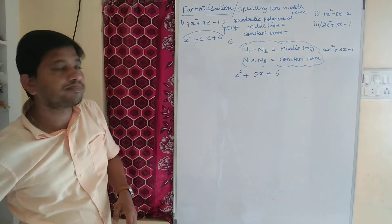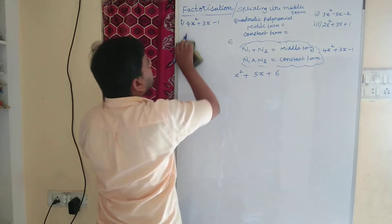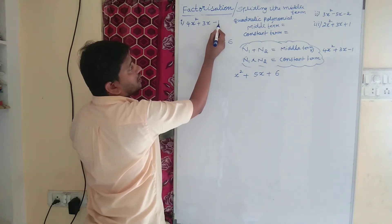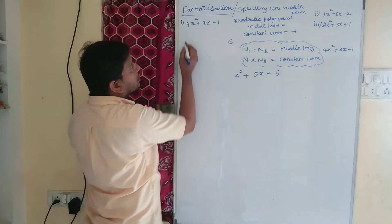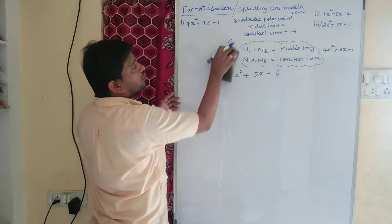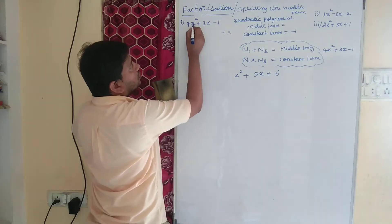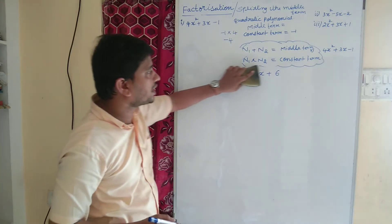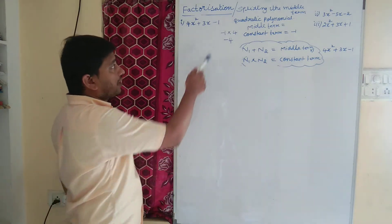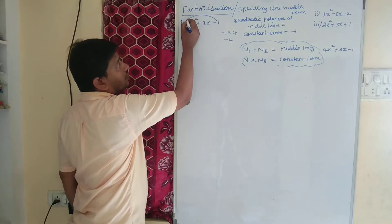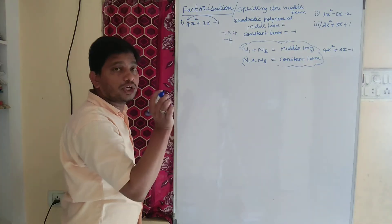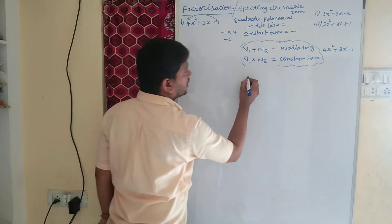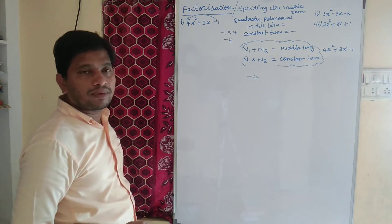But in this case, if you observe here, the coefficient of x square is 4. So we have to multiply the constant term, which is minus 1, by the coefficient of x square, which is 4. Minus 1 into 4 is minus 4. We have to multiply the constant term with the coefficient of x square: minus 1 into 4 equals minus 4. So now we consider the constant term as minus 4.